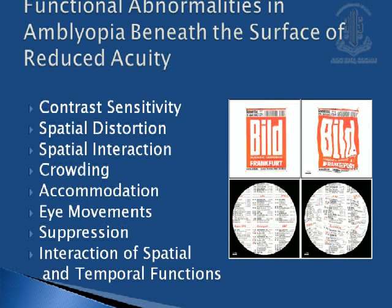Apart from visual acuity reduction, there are other functional abnormalities which occur in amblyopia. These include reduced contrast sensitivity, spatial distortion, spatial interaction, crowding, decreased accommodation, and suppression.